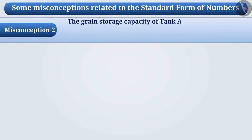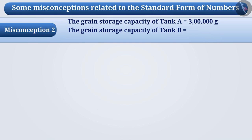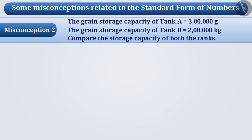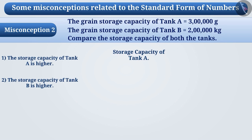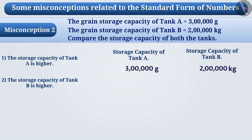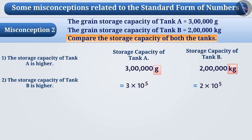Misconception 2: The grain storage capacity of tank A is 3 lakh grams and the grain storage capacity of tank B is 2 lakh kg. Compare the storage capacity of both tanks. Some children see that tank A is 3 lakh, that is 3 × 10⁵, and tank B is 2 lakh, which is 2 × 10⁵. Their attention does not go towards the units.